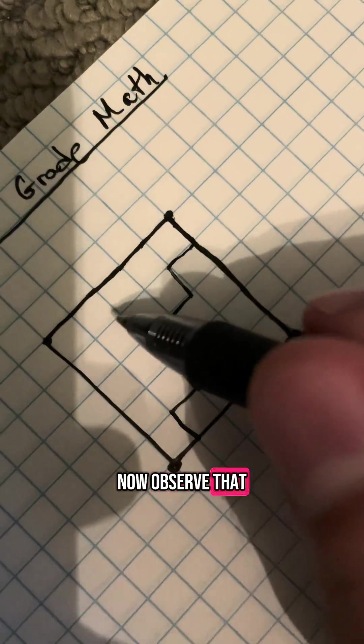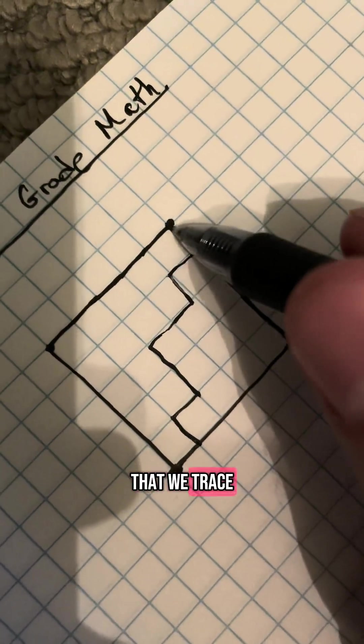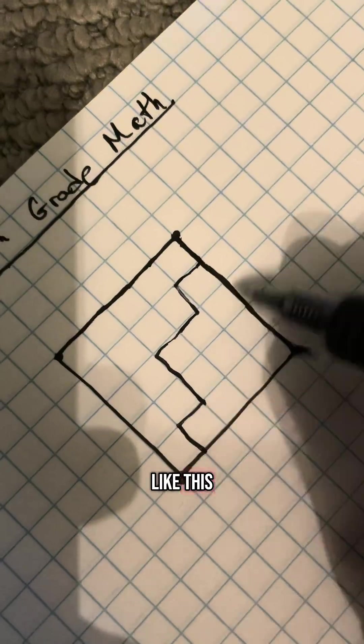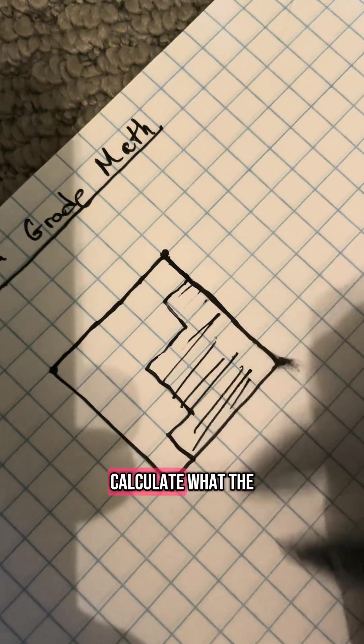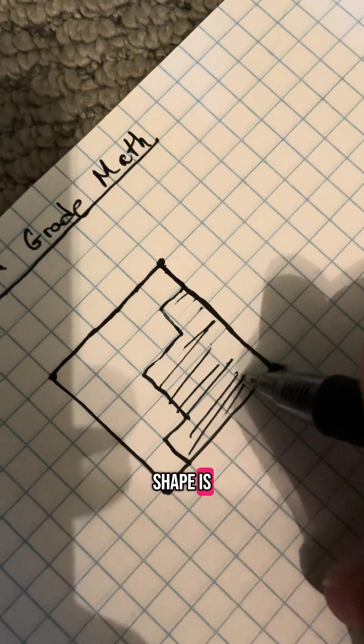Now observe that to the right of the path that we traced out that looks like this, we have this shape. And if we fill in this shape region, we can actually calculate what the area of the shape is,